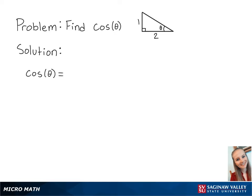For this problem, we're going to find cosine of theta of the following right triangle. Cosine of theta is equal to the adjacent side length of the angle over the hypotenuse.